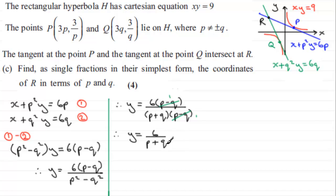Okay, so we've got that. All we need to do now is take this value of y and substitute it in either equation 1 or 2. I'm just going to go for equation 1. What does that give us? Well, we've just got x plus p squared times y, so that's going to be 6p squared over p plus q, and that equals 6p.